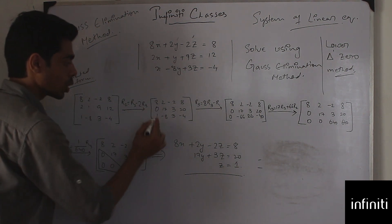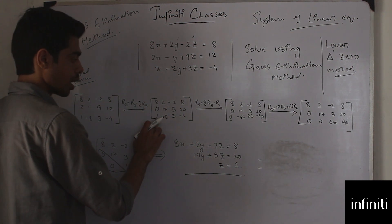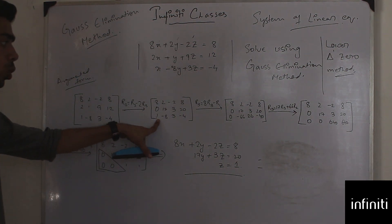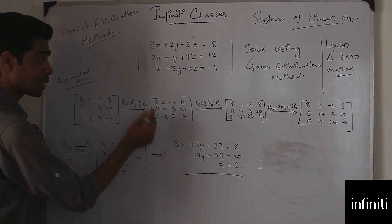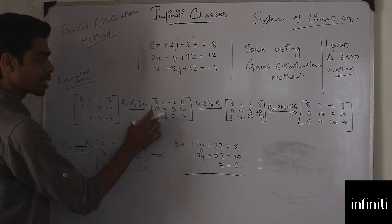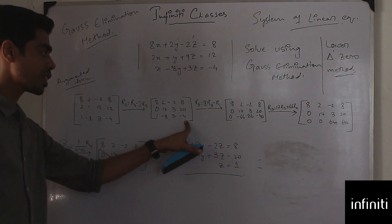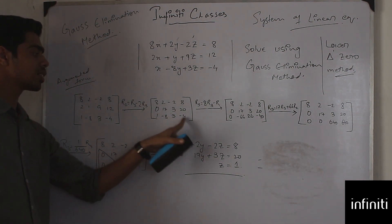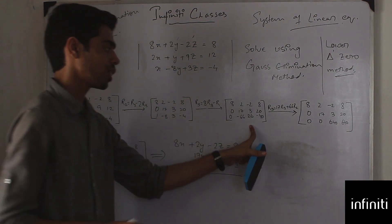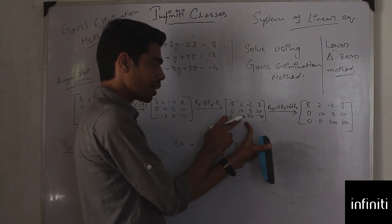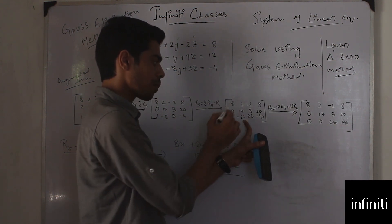I've got a zero in the required position. Now my target is to get zeros in the remaining lower triangle positions. To convert the next element to zero, I'll multiply the first equation by 8 — similar to the first element — and subtract that equation from the third equation. That gives me zero in that position.